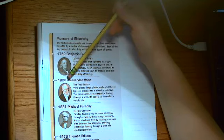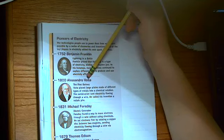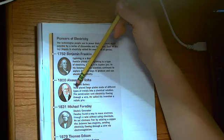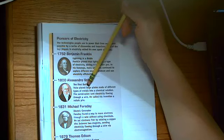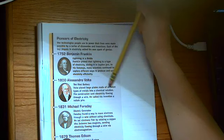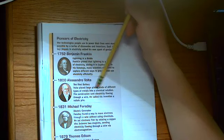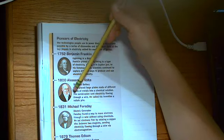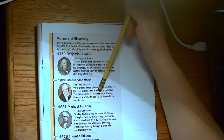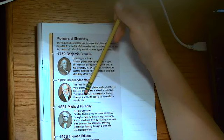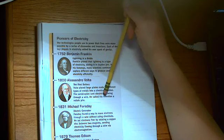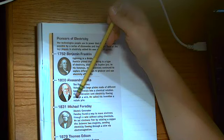1800, Alessandro Volta, the first battery. Volta placed large plates made of different types of metals into a chemical solution. The combination sent electricity flowing through a wire. He called his invention a voltaic pile.